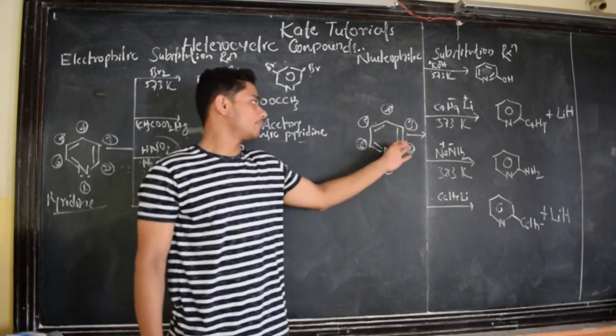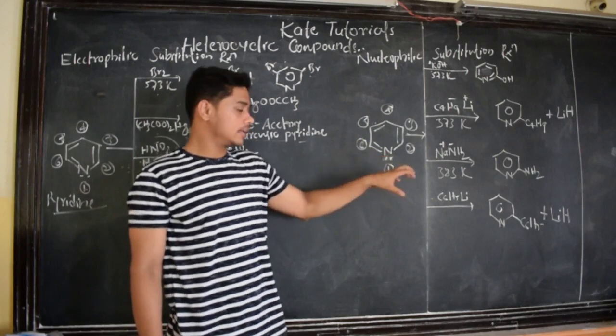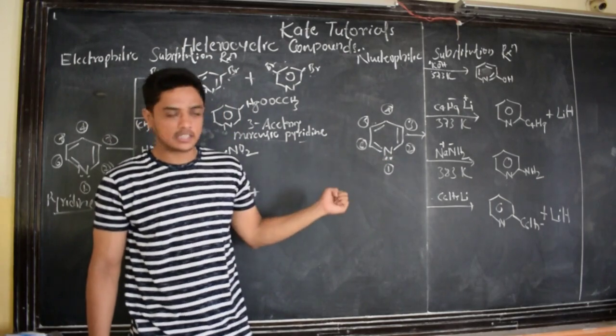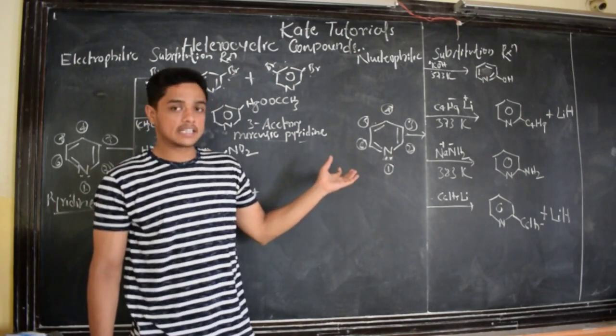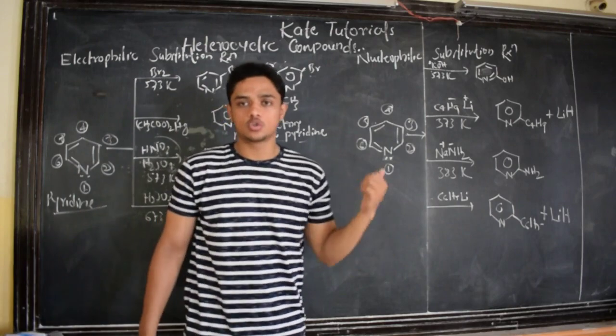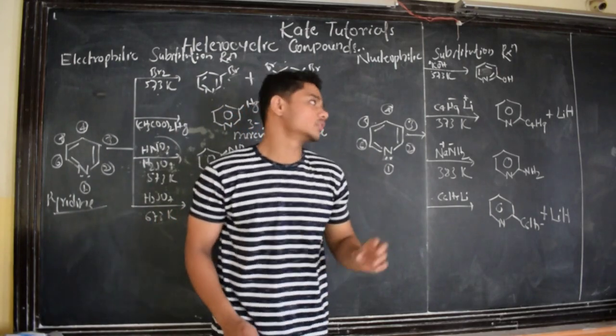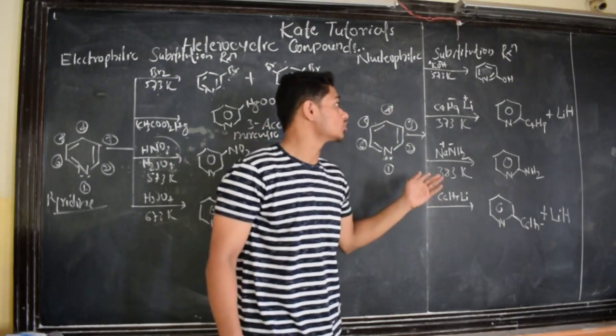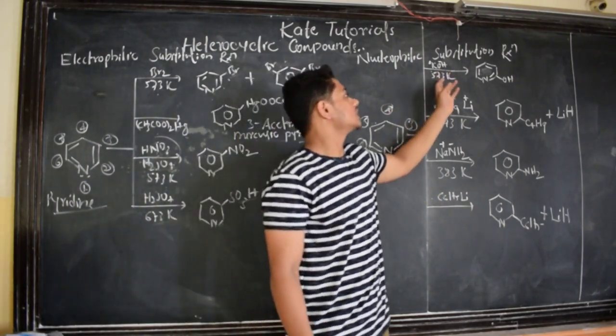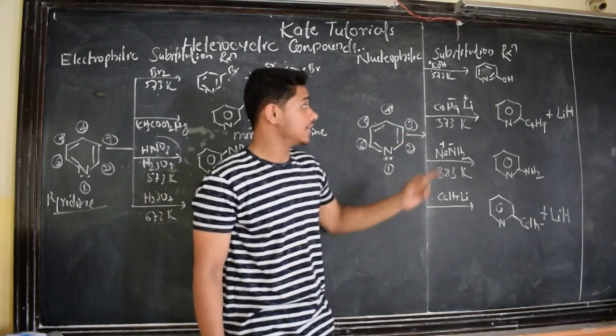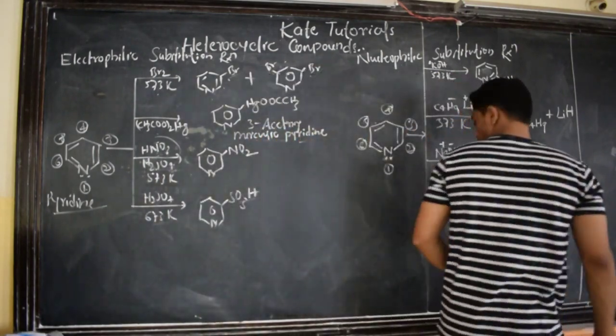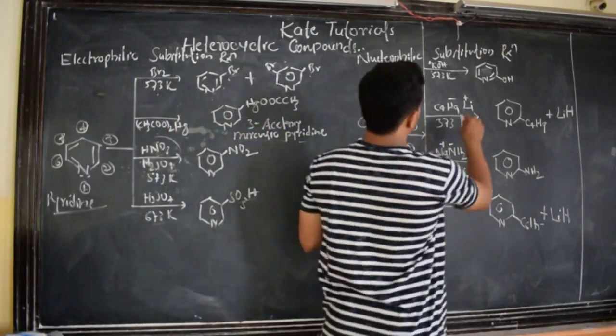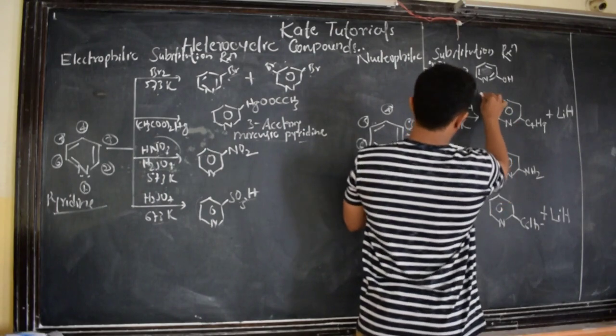And because of this carbon which are electron deficient because of the minus I effect of nitrogen, that is it is going to deactivate the ring. That is it is going to pull the electron from this carbon. So these carbons are electron deficient. So these are going to react with the nucleophile. And there are some nucleophilic substitution reactions. See here, when KOH at 573 is reacted with pyridine, we got this compound. The name for this compound is, let me write here so that it will be useful for you.